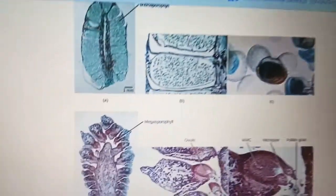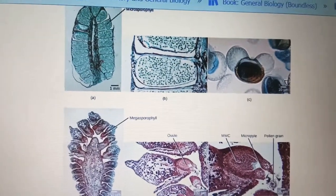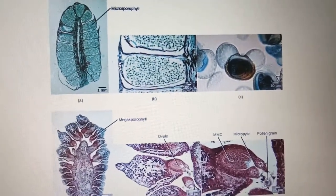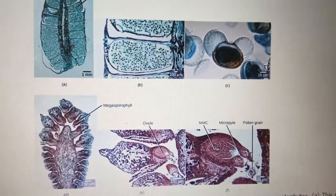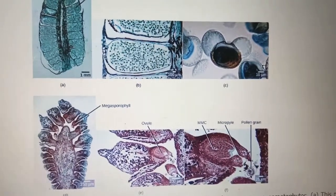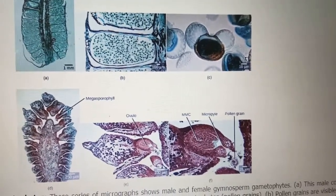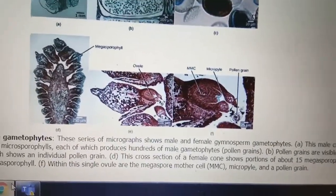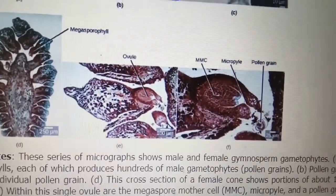If we look at the internal structure, in the upper diagram you can see the microsporophylls, and in the lower structure you can see the megasporophylls attached to a central axis. In part B, you can see the microspores formed inside the microsporophyll. In part C, you can see a winged pollen grain, which can be easily dispersed by wind — wind pollination is most common in gymnosperms.